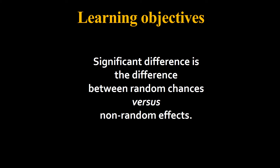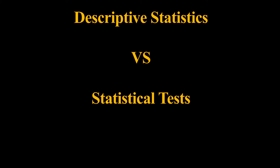So if something is significantly different — like our weight loss example — we would say the weight loss pill is actually causing weight loss. If it's random, you could run the experiment again and get different results. Broadly speaking, there are two types of stats: descriptive stats and statistical tests, also known as inferential statistics.